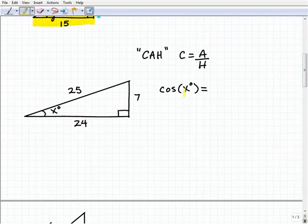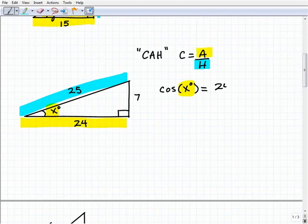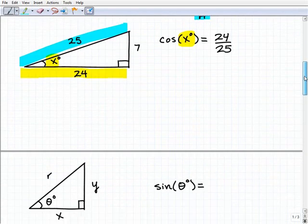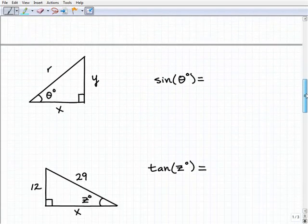Once again, cosine of angle x, here's my angle. 24 is the adjacent side, and the hypotenuse, of course, is going to be this side. So let's go ahead and set that up. Cosine of angle x will be 24 over 25. Really, it should be pretty easy, especially with a little memory aid.